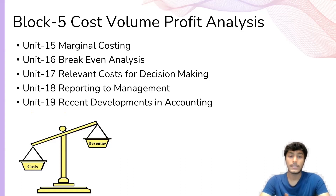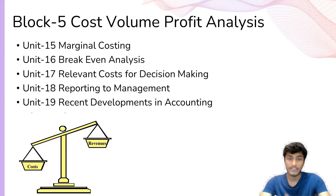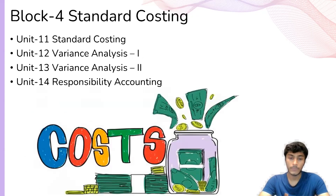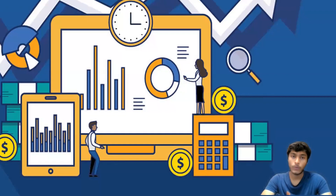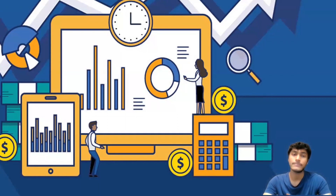Coming to unit 18, which is reporting to management — what and how can we report a particular accounting decision to management, and what are the different kinds of present developments in accounting that we as managers should know. So this was the whole overview of the learnings we are going to cover for this subject, accounting for managerial decisions. Again, discussing the importance: managerial accounting helps management take decisions that are more efficient and operationally efficient for all stakeholders, which increases the value of a company. This was a brief about accounting for managerial decisions — thank you.